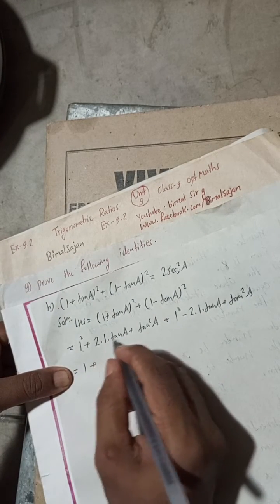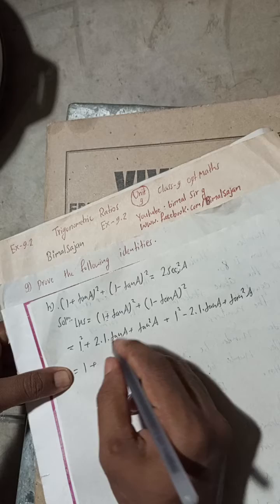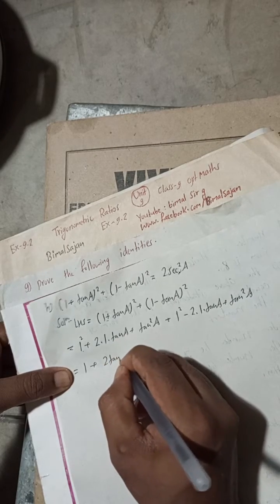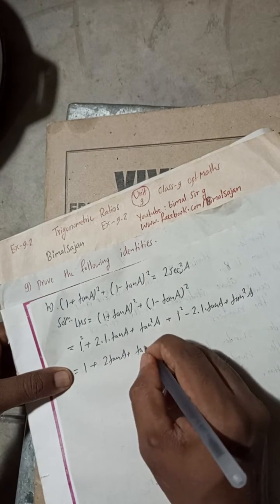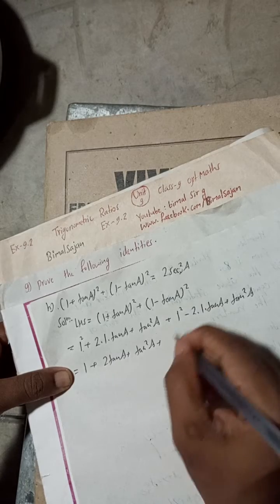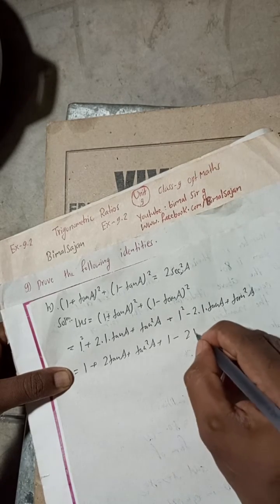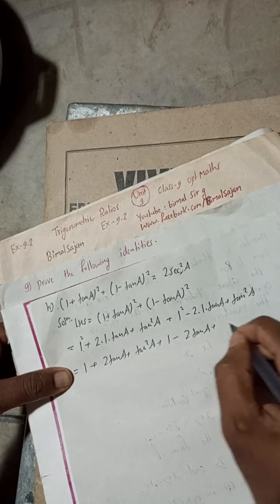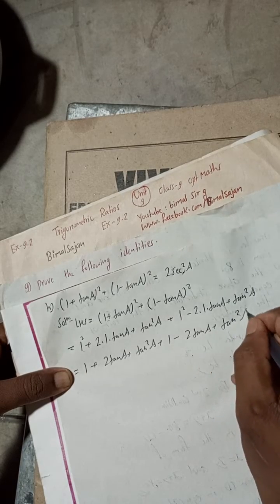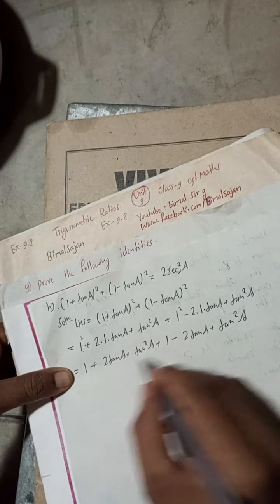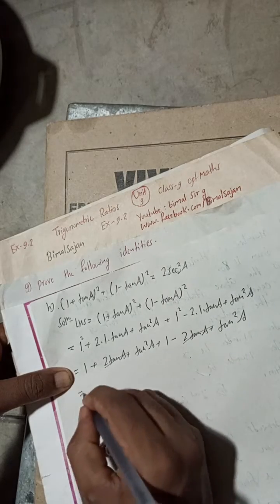1² is 1 + 2 tan a + tan² a plus 1² is 1 - 2 tan a + tan² a. So this is plus 2 tan a and this minus 2 tan a cancel. Now this is 1 + 1, that's 2, plus tan² a and tan² a plus tan² a.